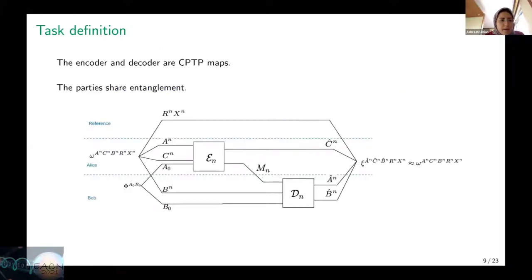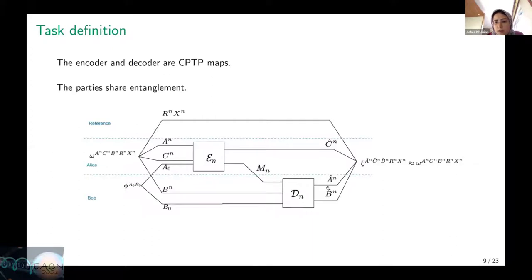The task is shown in this figure. The parties have access to many copies of the source, and we assume the encoder and decoder share entanglement in registers A₀ and B₀. The goal is for Alice to compress system A and map it to system M^N of smaller dimension, send it to Bob, and Bob reconstructs system A^N such that the overall final state is very close to the original state and correlations with reference systems X^N and R^N are preserved.